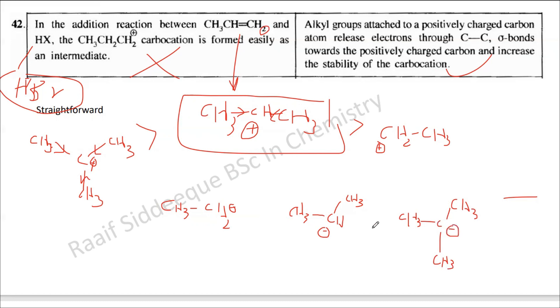In carbocations, through this induction effect it minimizes the charge and gives more electron density, so positive charges are neutralized. When there are more alkyl groups, this positive charge becomes smaller and the stability of the carbocation increases from primary to secondary to tertiary. What do you think about the carbanion stability of these three?